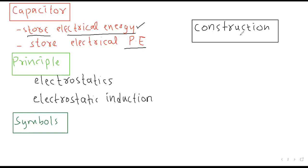Different types of capacitors have different symbols. ایک symbol میں دو parallel lines ہوتی ہیں۔ ایک symbol میں اوپر سے ایک line دے دیتے ہیں۔ اور ایک symbol میں ایک line curve ہوتی ہے اس طریقے کے ساتھ۔ یہ capacitor کی مختلف symbols ہیں۔